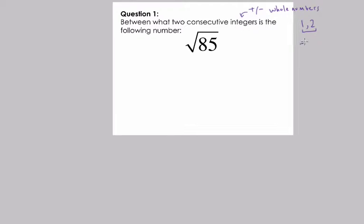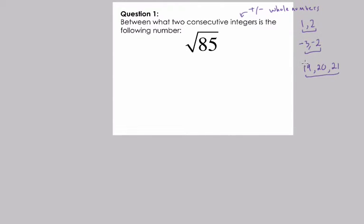The numbers negative three and negative two are also consecutive integers. And we can go higher — 19, the next consecutive integer would be 20, and then 21, and so forth. So again, consecutive integers just mean sequences of integers where there are no other integers between them. In other words, they're right next to each other.